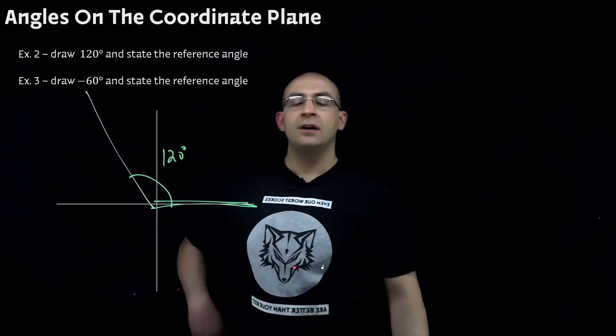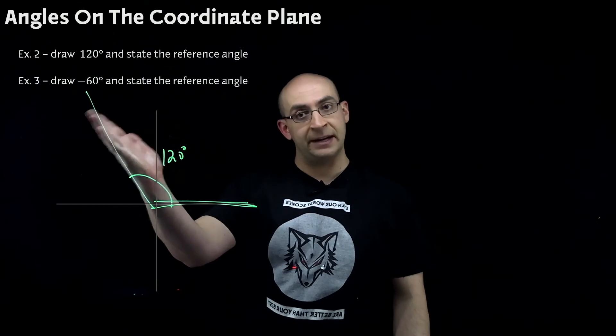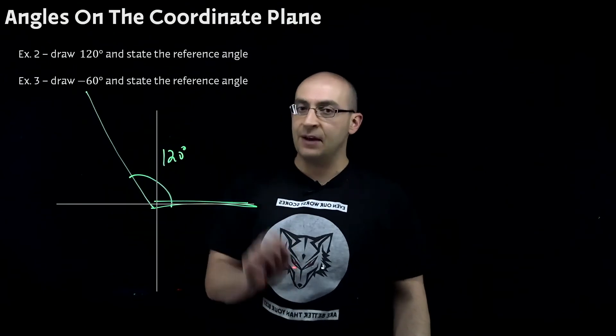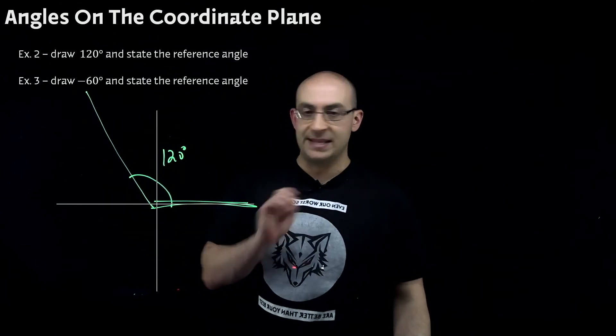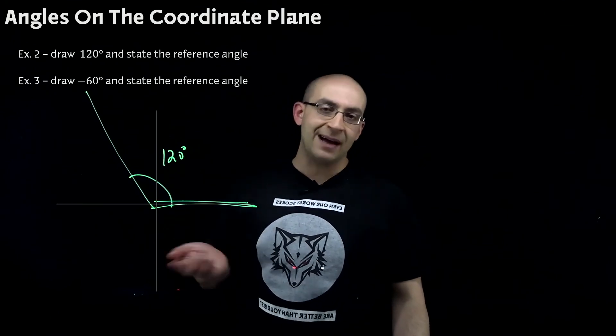Now, again, reference angle just means what's the difference between the angle where it terminated and the x-axis. And again, these are always acute. We never will have an obtuse reference angle and we won't have any negatives. So, it's going to be a positive acute angle.